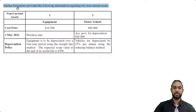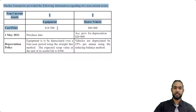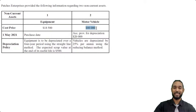It says Patches Enterprises provided the following information regarding two non-current assets. The first one is equipment and the second one is motor vehicle. We have the cost price of each of them: $18,500 for the equipment and $80,000 for the motor vehicle.